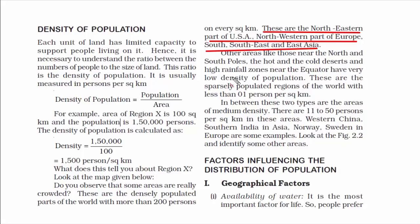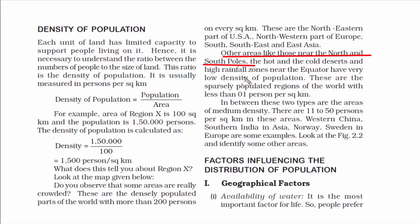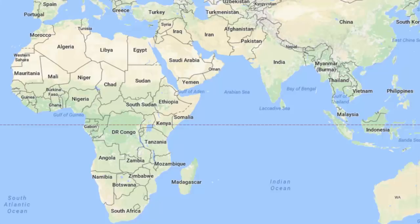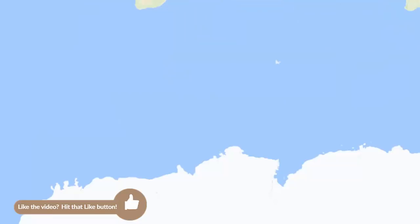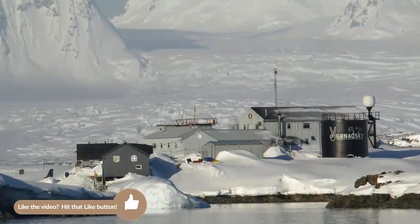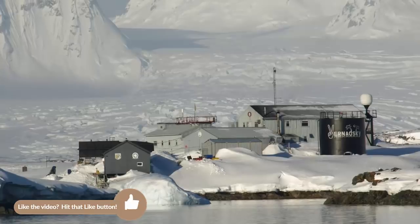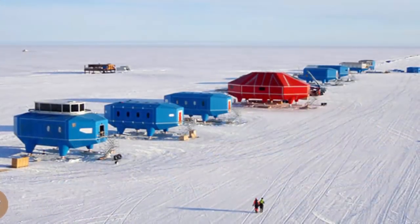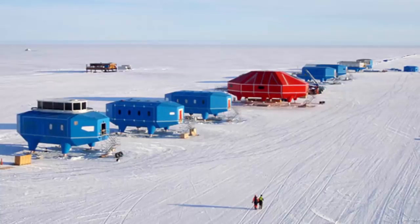Just keep these regions in mind — it's good to remember from an examination point of view. Now, there are some places where population density is absolutely low. These places are the North and South Poles, extremely cold areas. Civilization does exist there but it's very low. There are many international research stations in Antarctica, and mostly people are there to do scientific research on climate change. Some 30 countries have their research stations there.